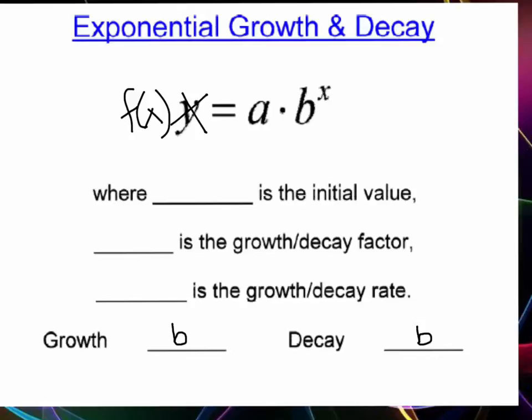Here is the correct answers. A is the initial value. B is the growth or decay factor, that's usually inside parentheses. The growth rate is R equals B minus one, so you take the B and subtract one. The decay rate is one minus B. Growth is for a value of B greater than one, and decay is for B greater than zero but less than one, so generally a fraction or decimal.